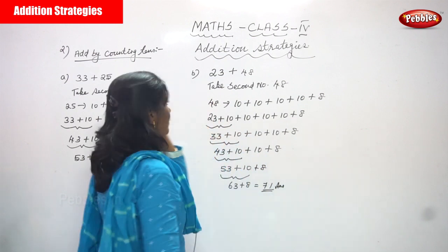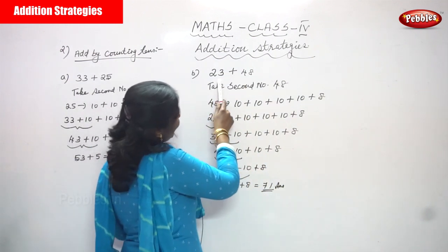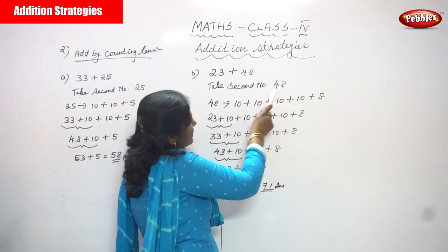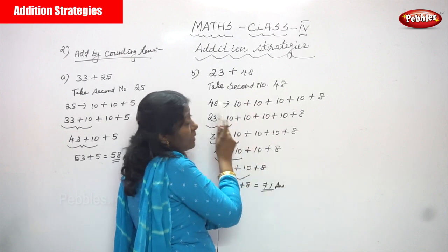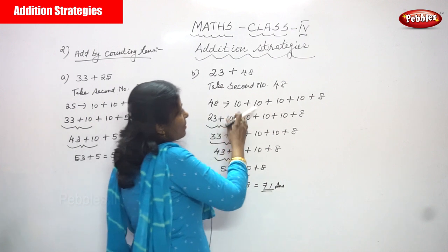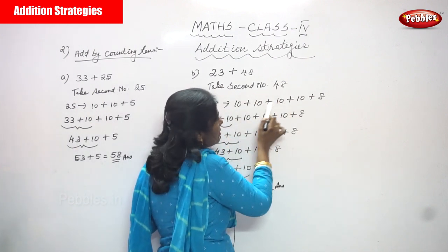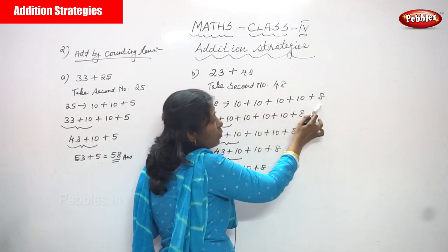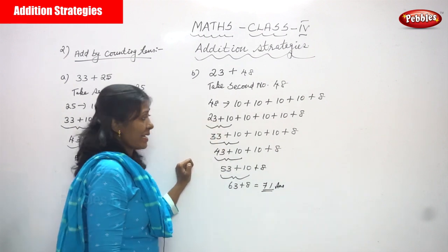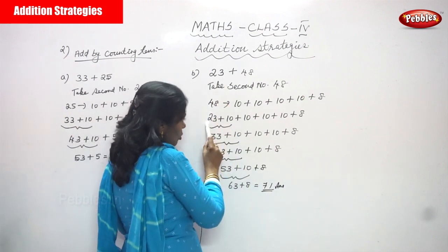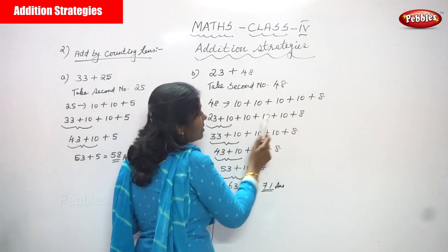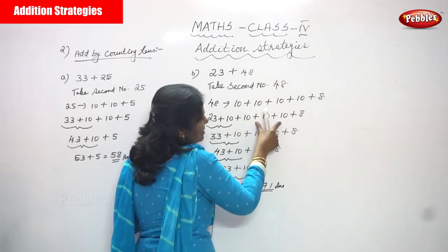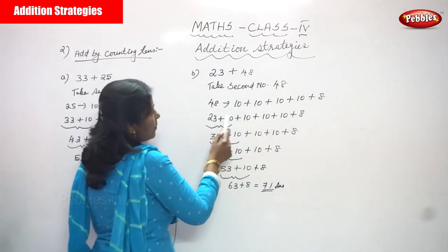Now the second sum: 23 plus 48. The first number is 23 and the second number is 48. I split 48 by counting tens: 10 plus 10 plus 10 plus 10 plus 8 — because 10, 20, 30, 40, and 40 plus 8 is 48. So I write 23 plus 10 plus 10 plus 10 plus 10 plus 8.